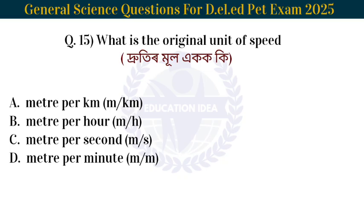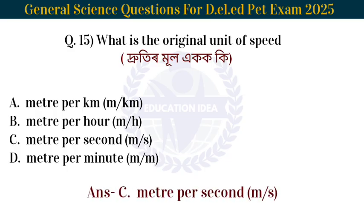Next question: What is the original unit of speed? The original unit of speed is meter per second.